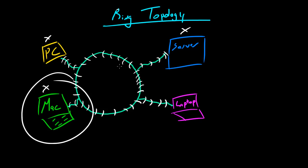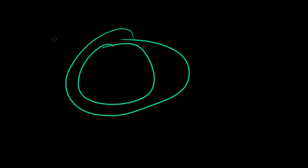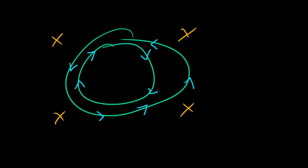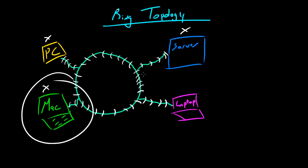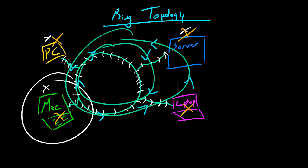Even though that's typically how it works conceptually, the way ring topologies are actually built involves two rings — one right beside the other. Say you have four or five devices on this network. The way these are typically built, you set up two rings where the data flows in one direction on one ring and in the opposite direction on the other ring. Both of these are called ring topologies — the single ring being the simplistic version, and this double ring being the more common one where data can flow in opposite directions.